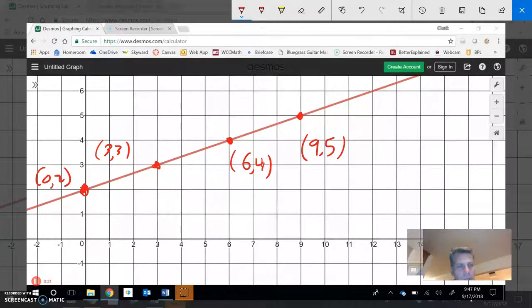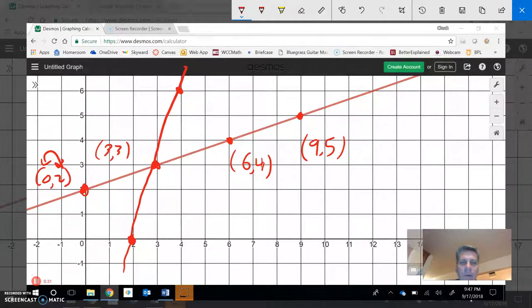And remember what inverses do is they switch the input and the output, the x and y switch. So 0, 2 would go through the point 2, 0. 3, 3 is at 3, 3. 6, 4 would be at 4, 6. There's just a sketch of the inverse of that. And remember, they're going to reflect across that line right there, that y equals x line.